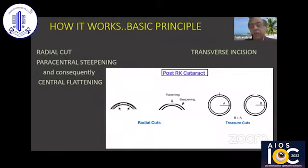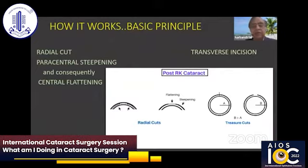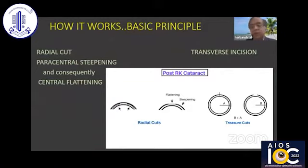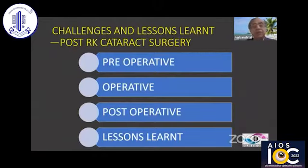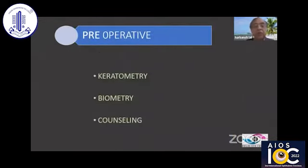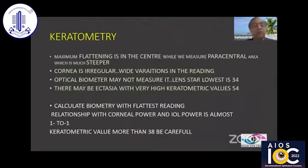So we know how RK used to work. We used to give a paracentral incision which becomes steeper and central flattening used to take place. The problem is it keeps on happening throughout the period of the patient's life. So the challenges are basically preoperative, operative, postoperative, and lessons learned. The biggest problem is the preoperative — what is the keratometry, what is the biometry, and how to counsel these patients.